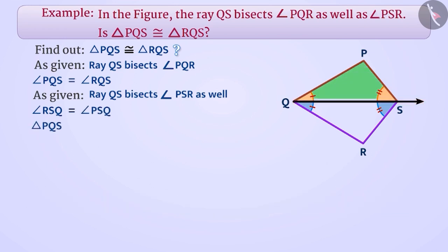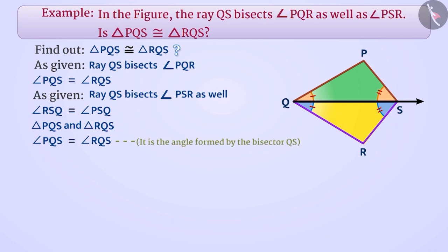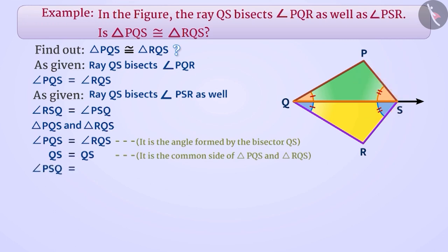Now, in triangle PQS and triangle RQS: angle PQS is equal to angle RQS, since they are the angles formed by the bisector QS. QS is equal to QS, since this is the common side of triangle PQS and triangle RQS. Similarly, angle PSQ is equal to angle RSQ because they are also the angles formed by the bisector QS.